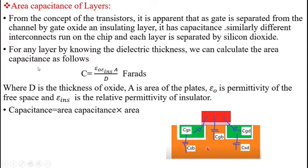For any layer, by knowing the dielectric thickness, we can calculate the area capacitance as follows: C = ε·A/D, where ε = ε₀ × ε_INS × A / D. Here D is the thickness of the oxide, A is the area of the plates, ε₀ is the permittivity of free space, and ε_INS is the relative permittivity of the insulator.